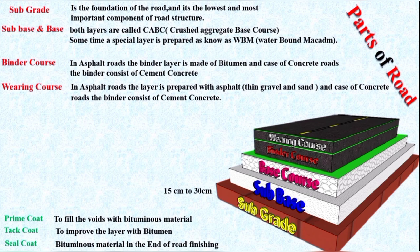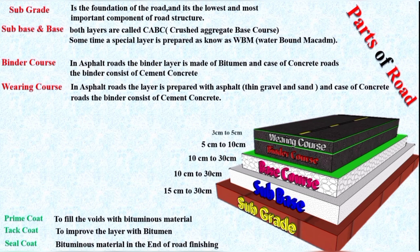The thickness of these layers depends on the total traffic on the road. Practically, the subgrade is provided from 15 cm to 30 cm. The sub-base is also provided from 10 cm to 30 cm. The base course is also provided from 10 cm to 30 cm. The binder course is provided from 5 cm to 10 cm. And the wearing course is provided from 3 cm to 5 cm. These thicknesses also depend on the road quality.